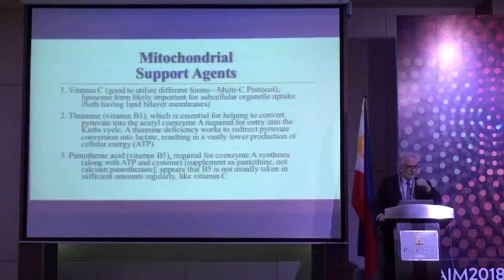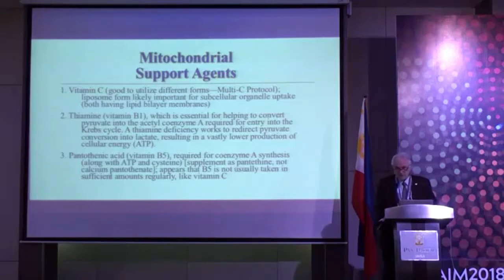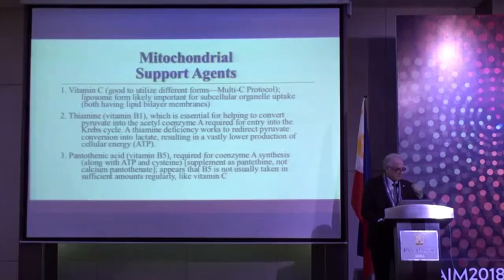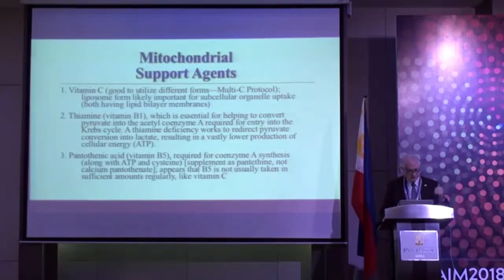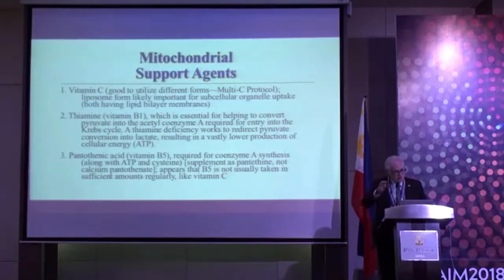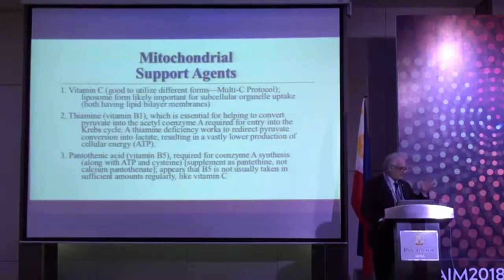Now let's talk about some mitochondrial support agents. There are quite a few of them — when you see different supplements promoted as support agents for healthy mitochondria, it's often a combination of these. Vitamin C, of course, is number one. Number two is vitamin B1, thiamine, which helps generate more acetyl coenzyme A, essential to initiate the Krebs cycle and generate energy inside the mitochondria. Pantothenic acid is number three.